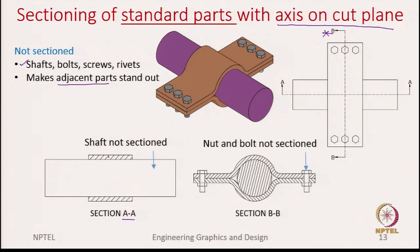Similarly, in section B-B, for the bolt and the nut we do not do the sectioning. If you look closely, the axis of the bolt and nut fall on the cutting plane. That is the reason why, though they are standard parts, we do not hatch. So these are the standard parts for which the axis falls on the cutting plane, and therefore we have not hatched.